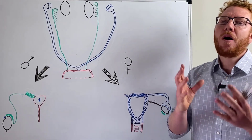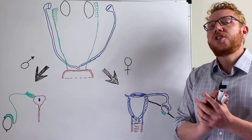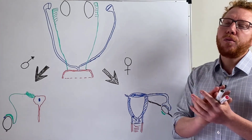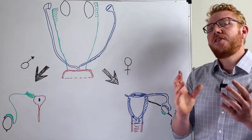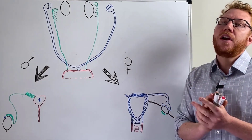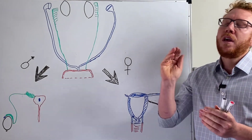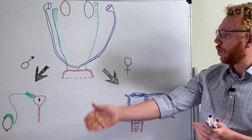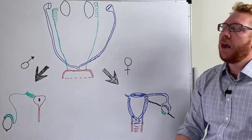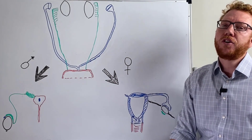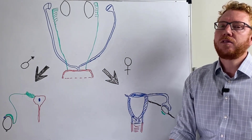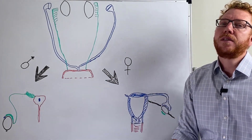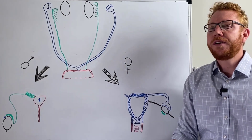Welcome to this lecture on biological sex determination. In this lecture we'll go through two important concepts: firstly, how the genital tracts differentiate to a phenotype male sex or phenotype female sex, and we'll also look at the differentiation of the external genitalia. This is a continuation of the embryology lecture on the genitourinary tract.